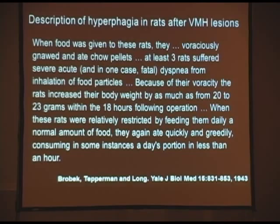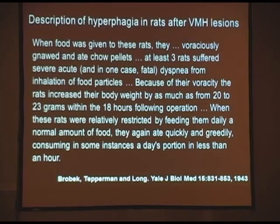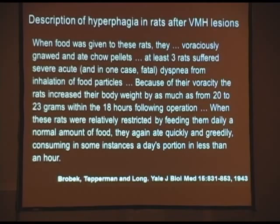Here's a description of hyperphagia in rats after ventromedial hypothalamic lesions — lesions which typically cause extreme obesity — from the very first paper I could find using the word hyperphagia, from 1943, by Brobeck, Tepperman, and Long in the Yale Journal of Biological Medicine. After the lesions were induced, when food was given to these rats just recovering from anesthesia, they ate voraciously and gnawed their chow pellets. At least three rats suffered acute and in one case fatal dyspnea from inhalation of food particles. When restricted to a normal daily amount, they consumed a day's portion in less than an hour.